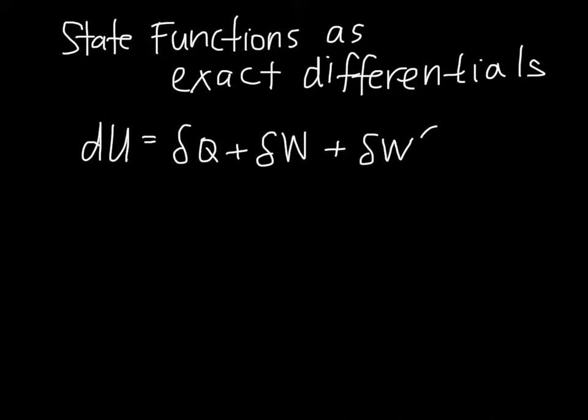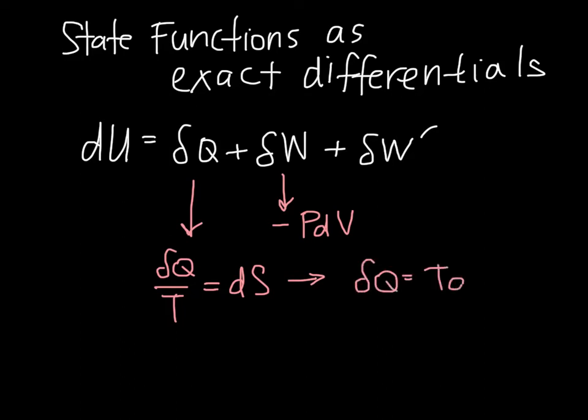We're going to assume that these processes that we're interested are done reversibly, and in that case we can rewrite this as negative P dV, and we can then keep in mind, if it's a reversible process, that delta Q divided by T is equal to dS, which lets us rewrite this as del Q equals T dS.